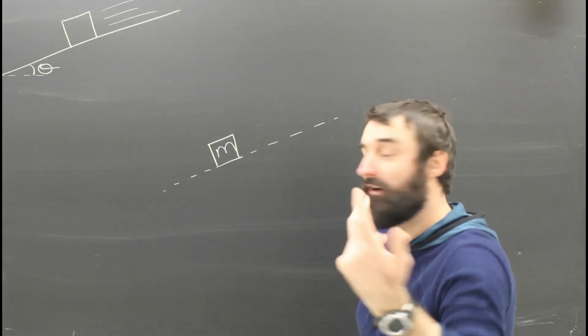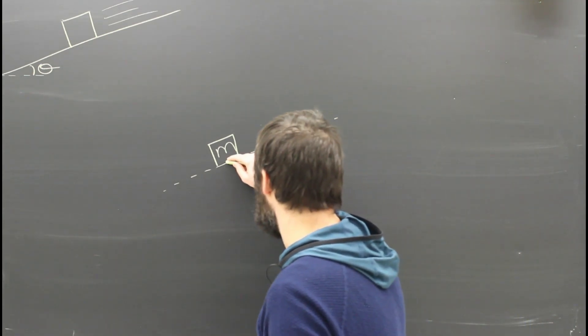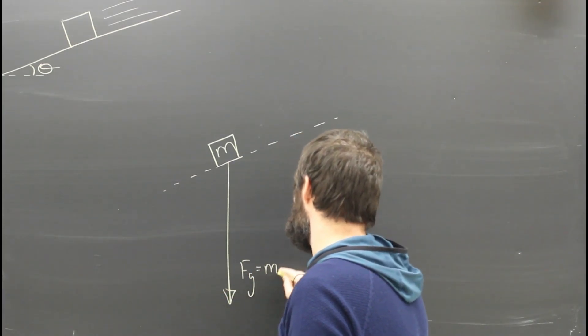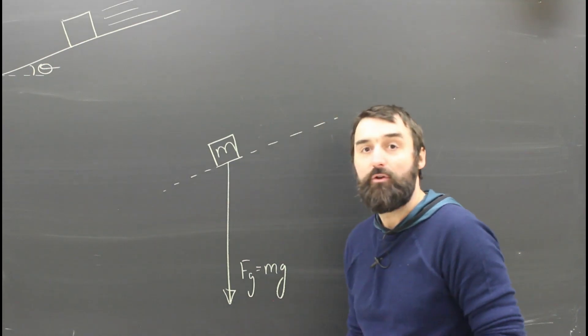So is there gravity on this thing? Of course there is. Let's assume we're on Earth. Gravity is down. Let's assume that it is equal to 9.8 times the mass of the thing, Mg. No problem.